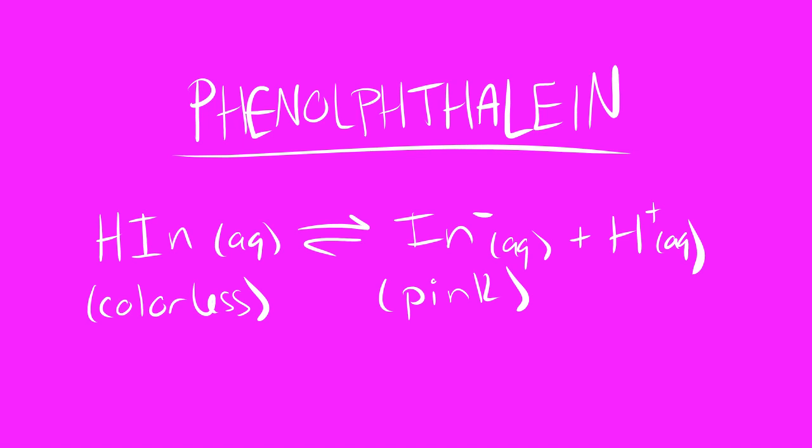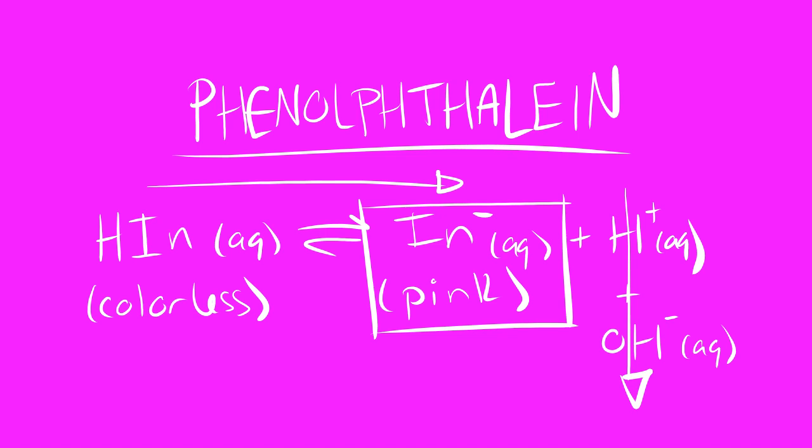Phenolphthalein is a weak acid unto itself. When added into solution in acidic conditions, the solution is going to appear colorless. However, when some base is added to solution, we are going to end up with a shift in the equilibrium where the base is going to be interacting with that H+ that is present from the dissociation of the weak acid phenolphthalein, which is going to shift the equilibrium of the phenolphthalein in solution towards its negative conjugate base form, which is pink in solution.